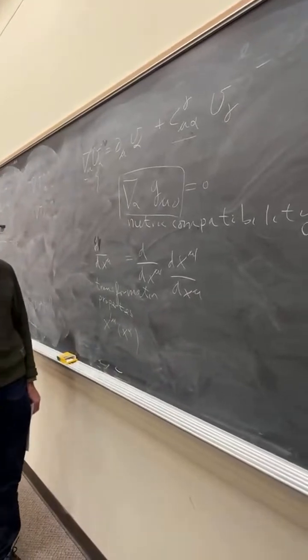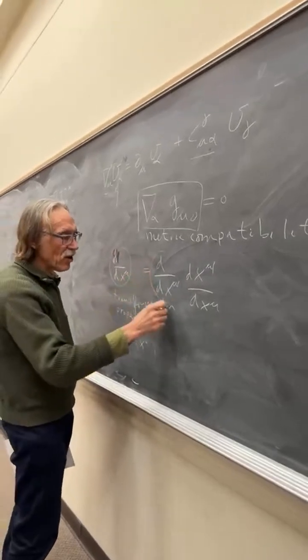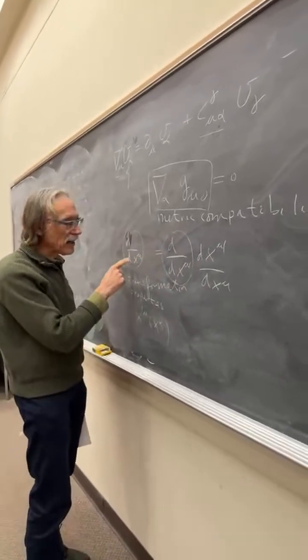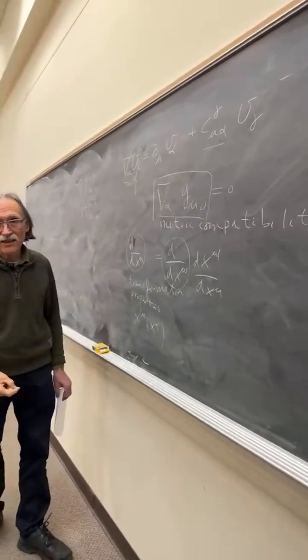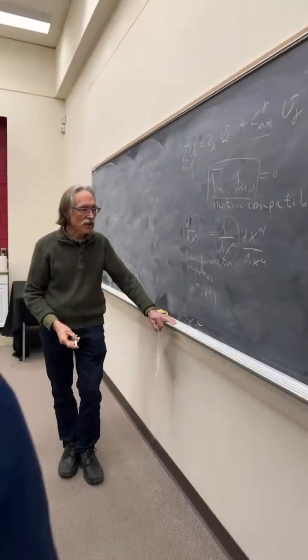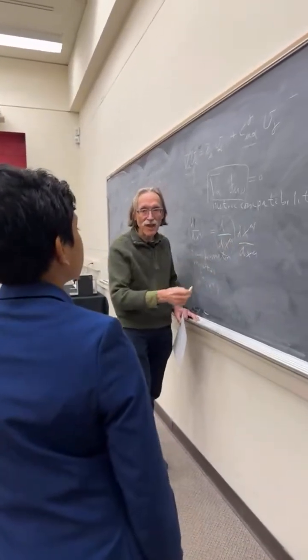So a vector is an object that transforms in this way. Like in special relativity, a vector was an object that transforms according to Lorentz transformation.